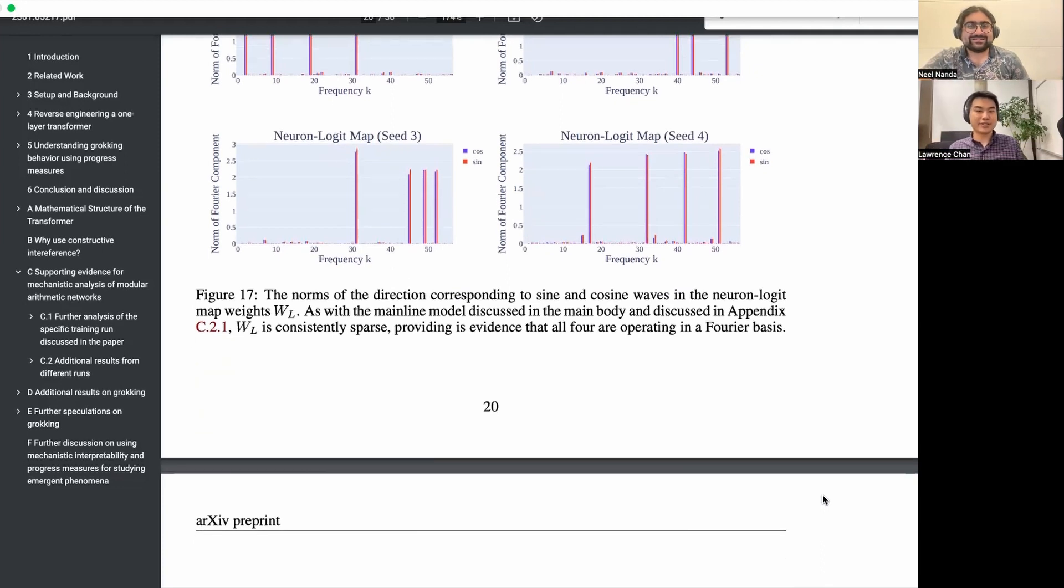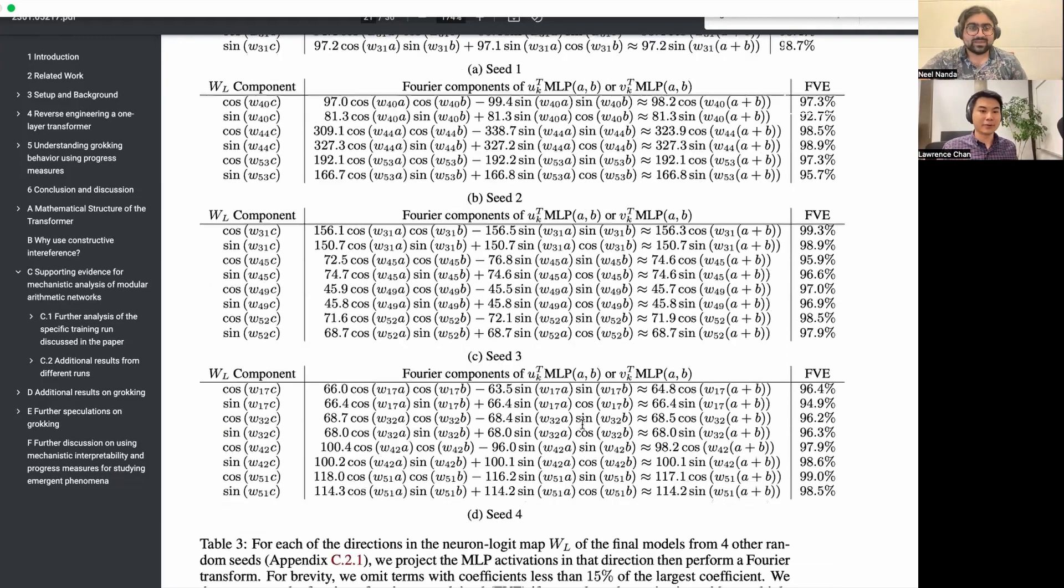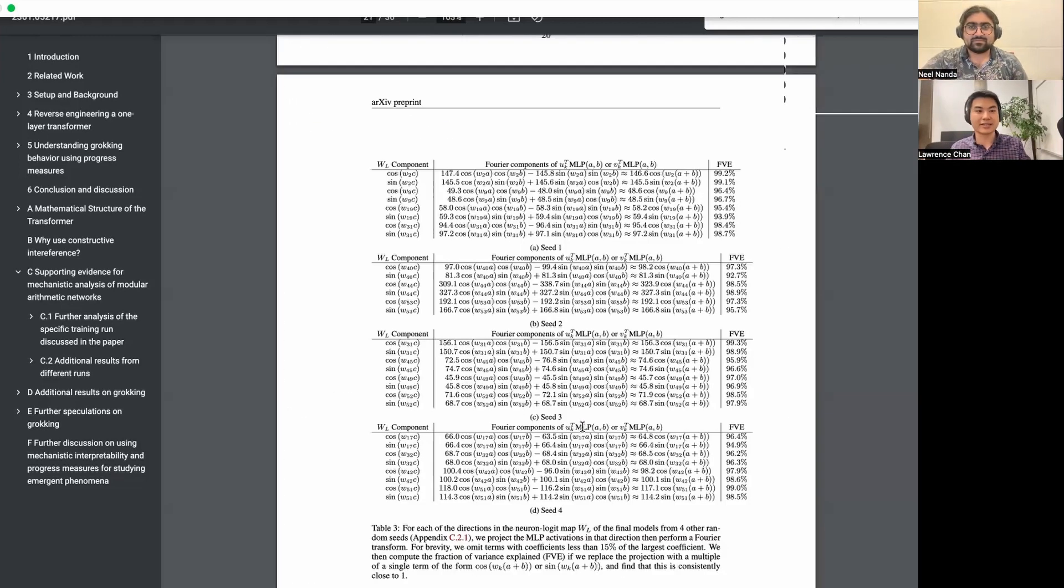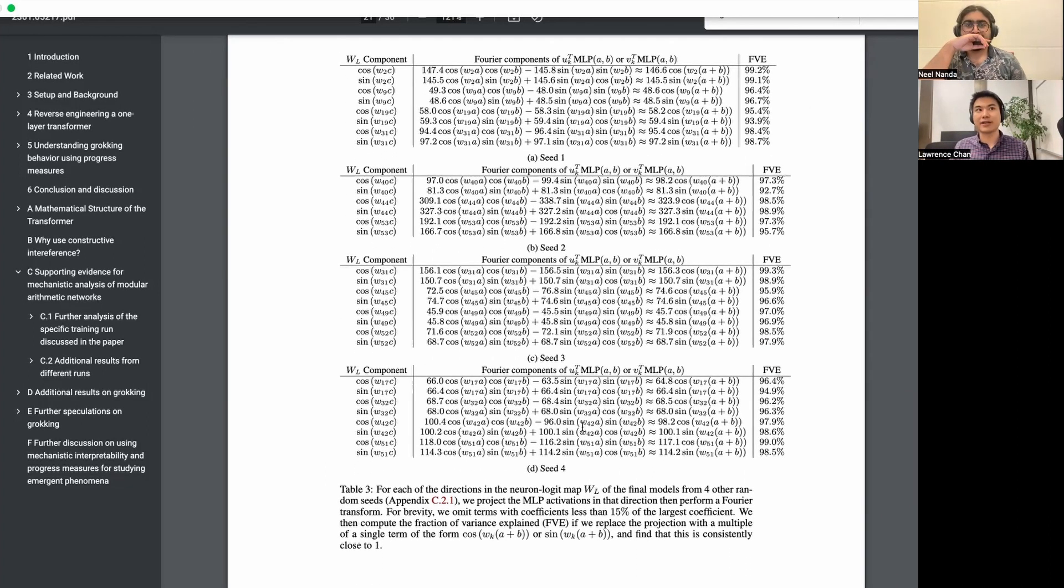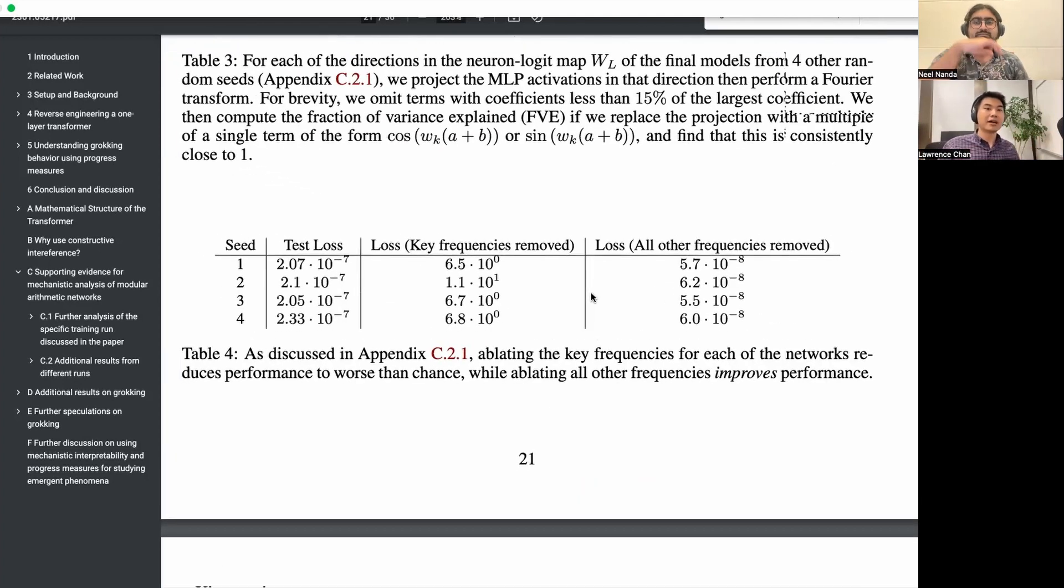And then we can see that, yep, the embedding matrix indeed very sparse for all of them. If we scroll down to figure 17, we can see the same thing for the neuron logic map. What's interesting about these matrices, the embedding matrices, is as with the mainline model, there seem to be more frequencies in the embedding matrix than there are in the neuron logic map. I'm not sure why exactly that's happening, but it is a consistently true result. Also that the same frequencies line up. C.2 has got three here. Actually, the first model I ever interpreted had three, and then I didn't save the random seed I used, so I had to train a different number for this one.